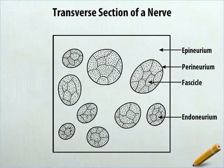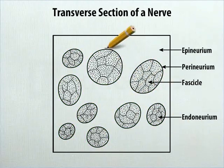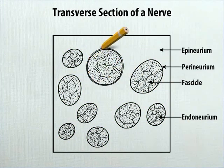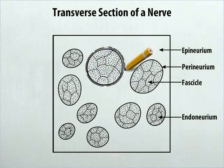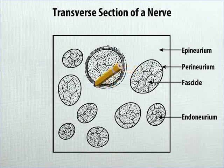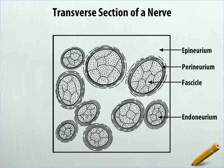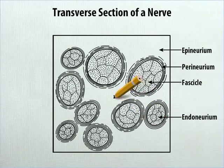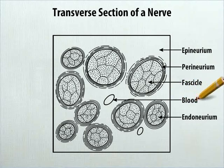Now outside each perineurium, draw 2-3 layers of irregular round shapes. In the empty space of the epineurium, draw 2 ovals of different sizes at these positions and label any one as blood vessel.